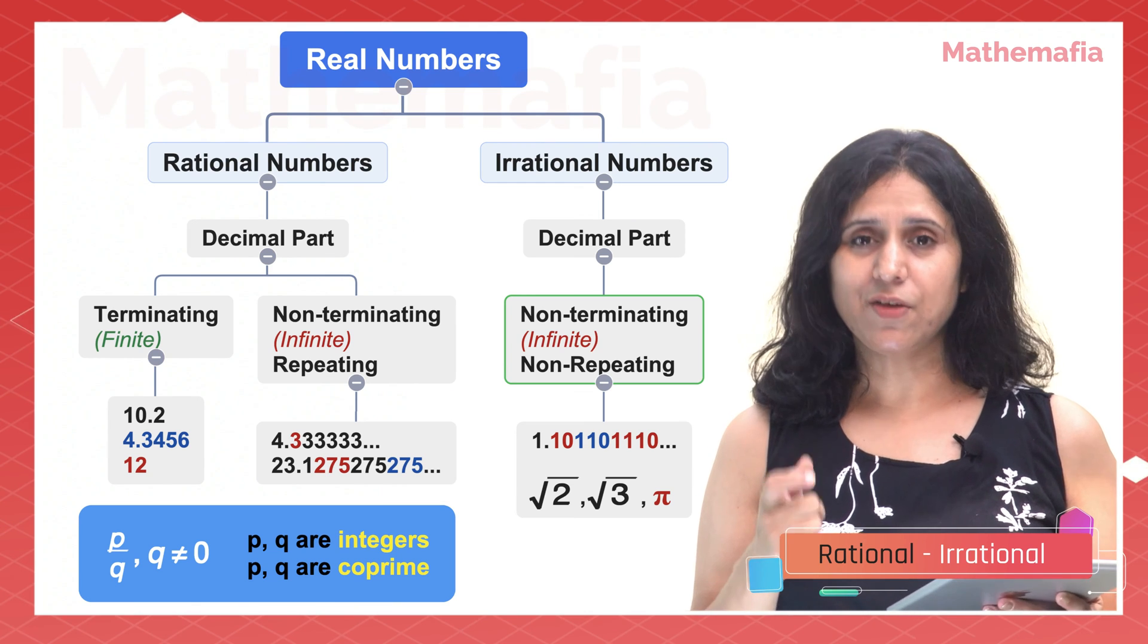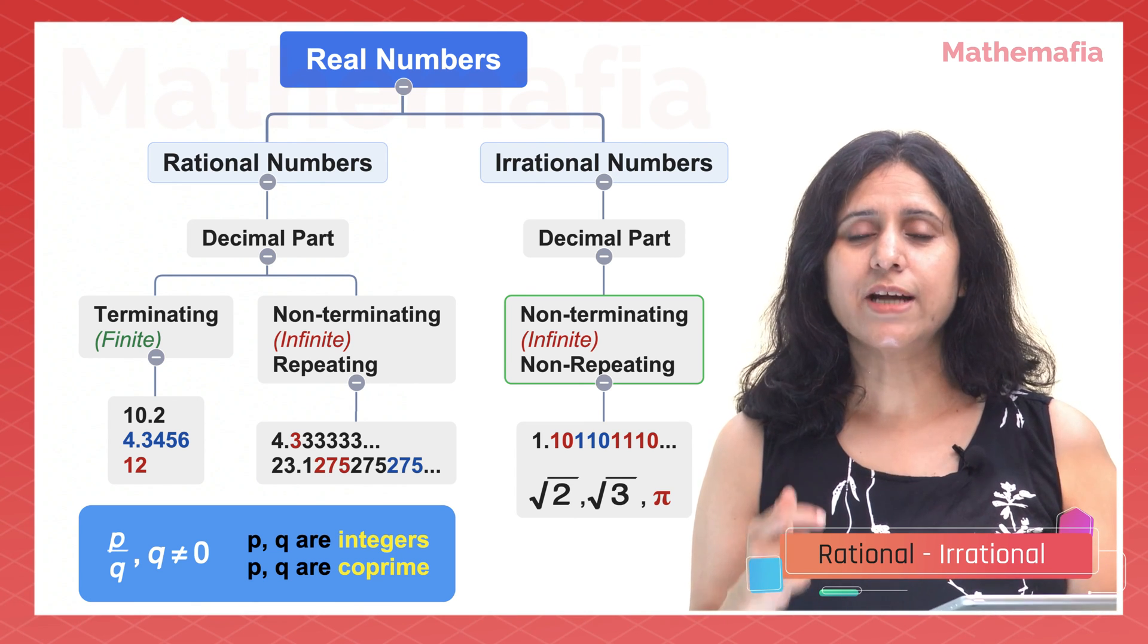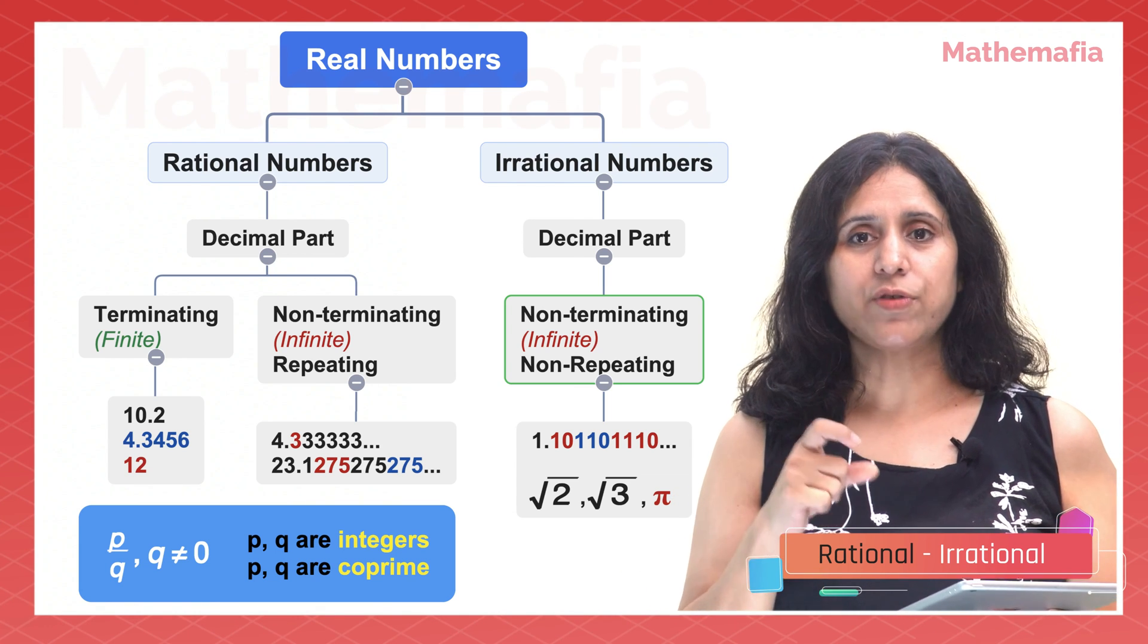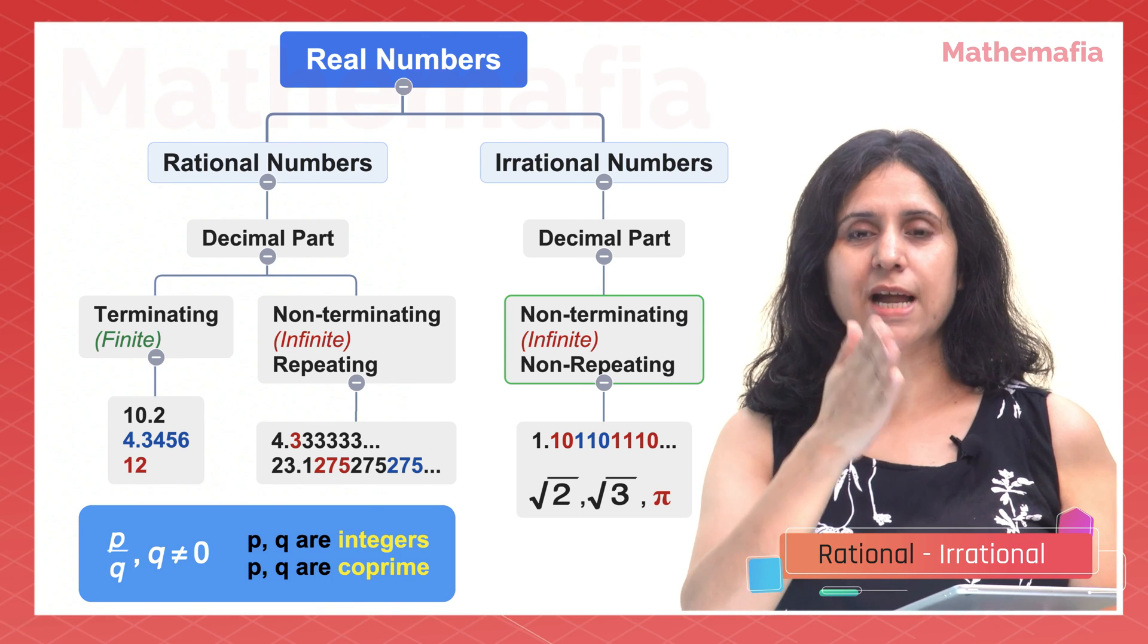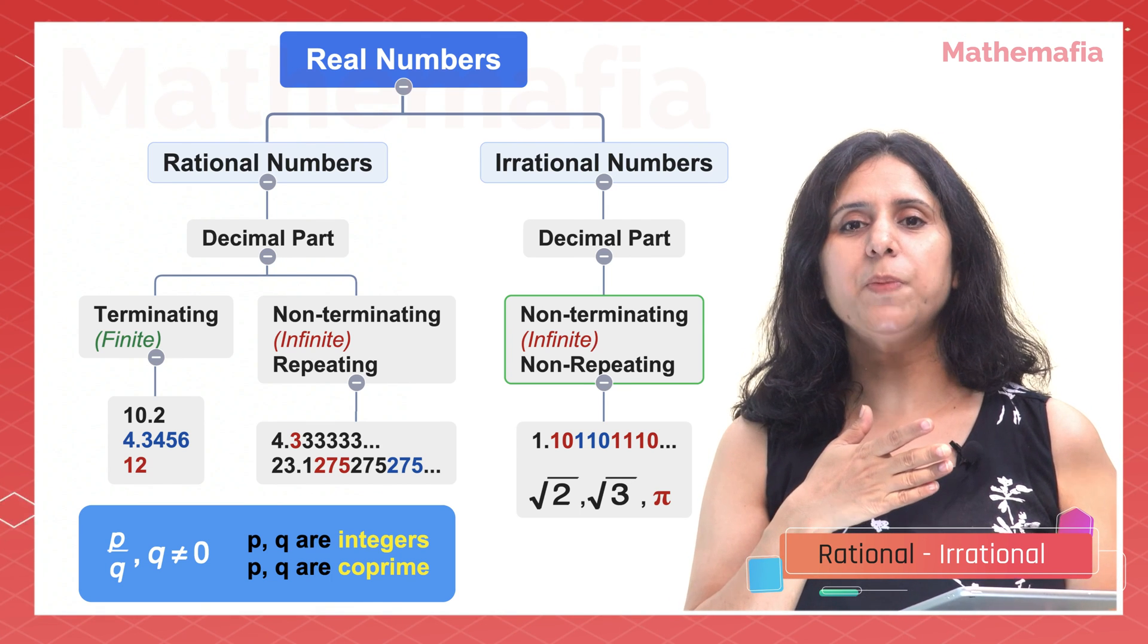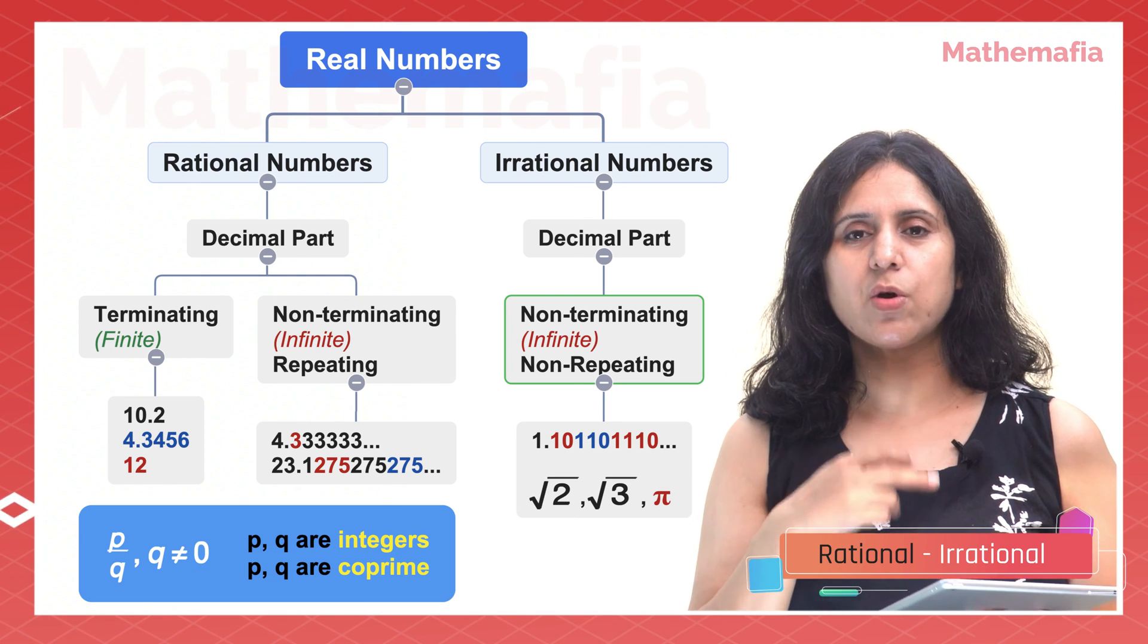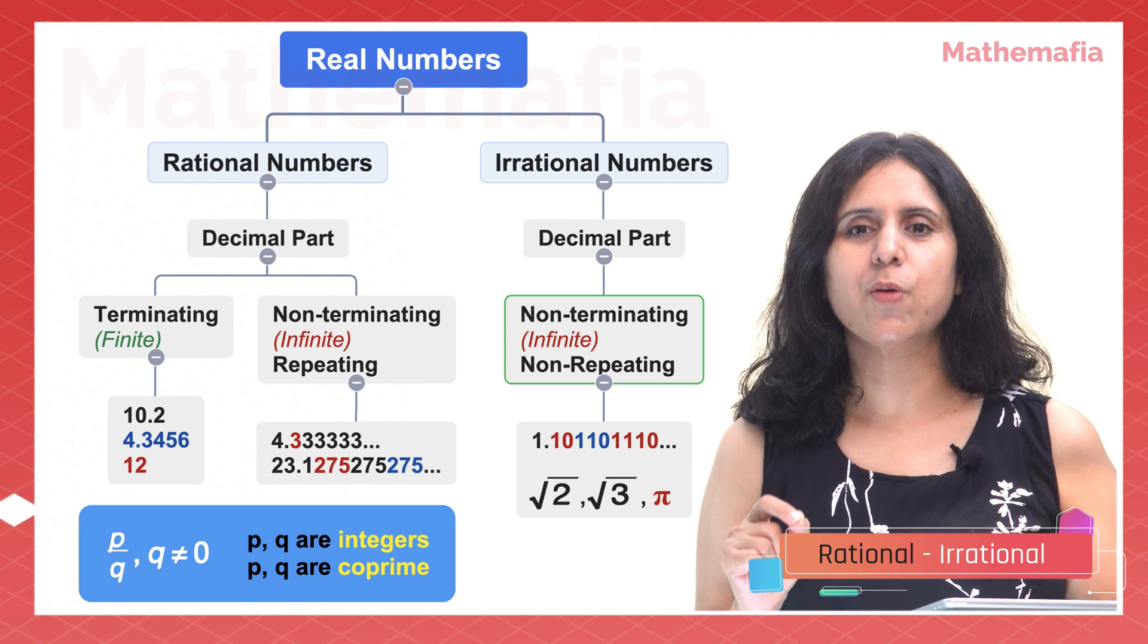So now you know whether a given number is rational or irrational, and you also know that if a number is rational it cannot be irrational because the sets of rational and irrational numbers are disjoint. Why? Because rational numbers can be written in the form p/q where p and q are co-prime integers and q is not equal to 0, whereas irrational numbers cannot be written in the form p/q.